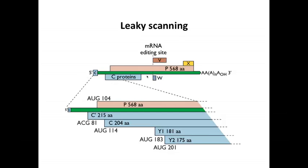How does it do that? This is a capped mRNA. Ribosomes bind the 5' end and begin to scan. As they scan, they reach the first initiation triplet, which is an ACG at base 81. This is not an AUG, but ribosomes sometimes will initiate at ACGs — they use the initiator Met-tRNA, which will weakly base pair with this codon. So you get a little bit of translation initiation there, but most ribosomes don't initiate and keep going, making just a little of the C' protein.